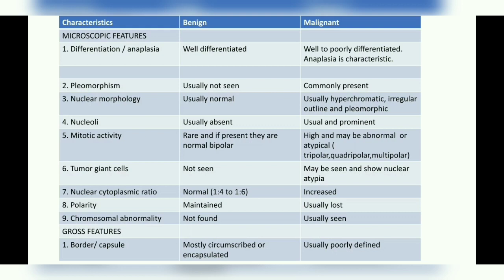Here we come across the term anaplasia. In a malignant tumor, you can have a range of differentiation, and if it has undifferentiated cells, that is called an anaplastic tumor. Anaplasia is a very characteristic feature of malignancy — if a tumor is more anaplastic, that means it is more aggressive.